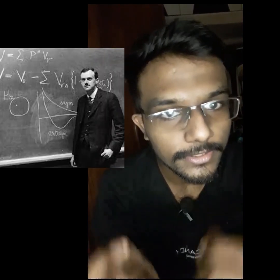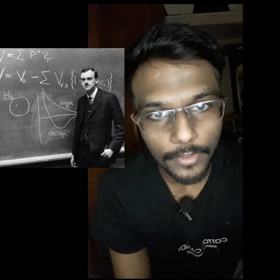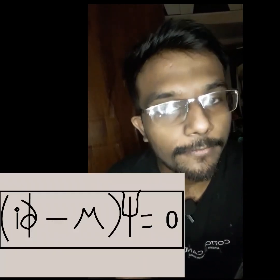Hi there, this is Pritha here. So way back in the year 1926, when one of the most profound theoretical physicists, Paul Dirac, discovered a beautiful equation — that's what we call the Paul Dirac equations.